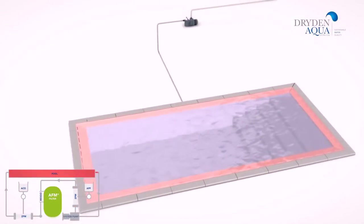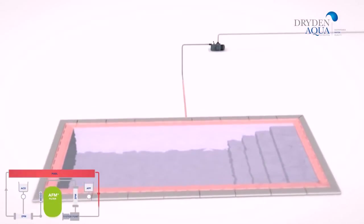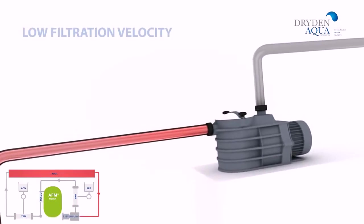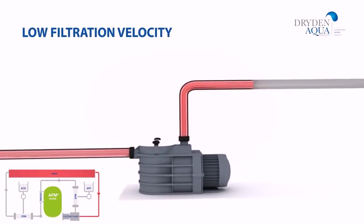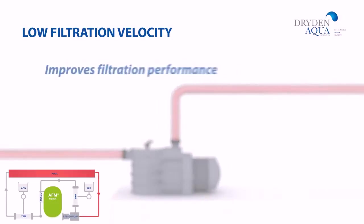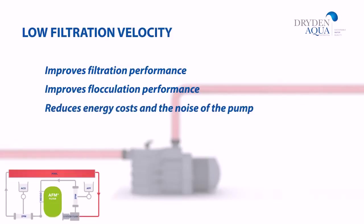A low filtration velocity gives the best mechanical filtration performance. By halving the speed, the performance will be four times better. It also increases the reaction time for a flocculant like APF to get the best possible filtration result. The energy consumption and noise level will be reduced. Since we need to backwash at a velocity of 40 to 50 metres an hour, a frequency controller is a good solution to work with different velocities for filtration and backwashing.